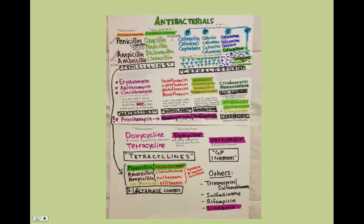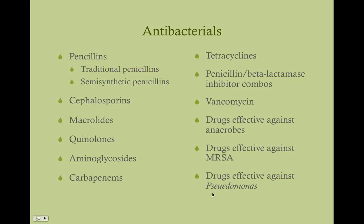The ones highlighted in green are antibacterials effective against Pseudomonas. The ones highlighted in violet are effective against MRSA. So we're going to start out with the penicillins, which are the traditional penicillins and the semisynthetic penicillins.